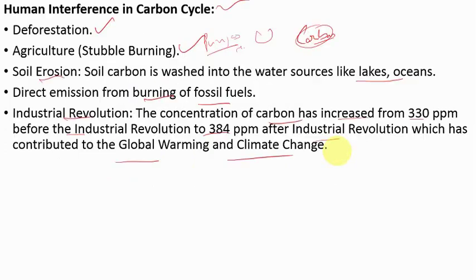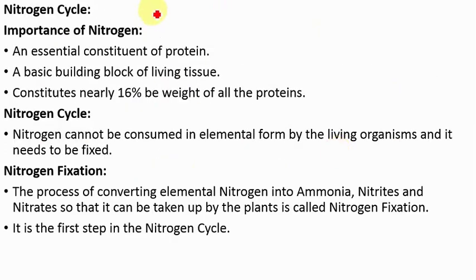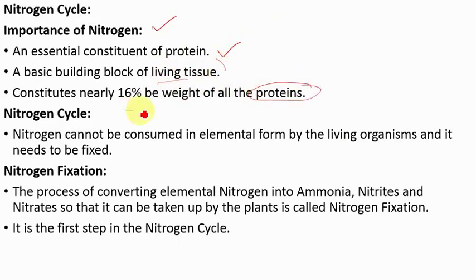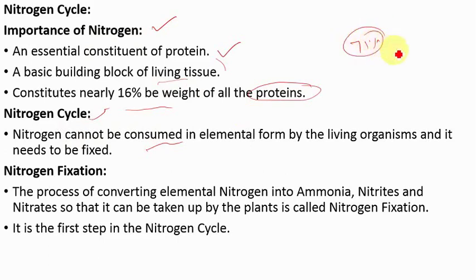This is all about the carbon cycle. Next is the nitrogen cycle. Before doing the nitrogen cycle, we must know its importance. Nitrogen is an essential constituent of protein — it forms an important constituent in protein and is also a basic building block of living tissue. Almost 16% of the weight of protein is constituted by nitrogen. Also, nitrogen is very abundant in our environment — almost 71% of our atmosphere constitutes nitrogen by volume.